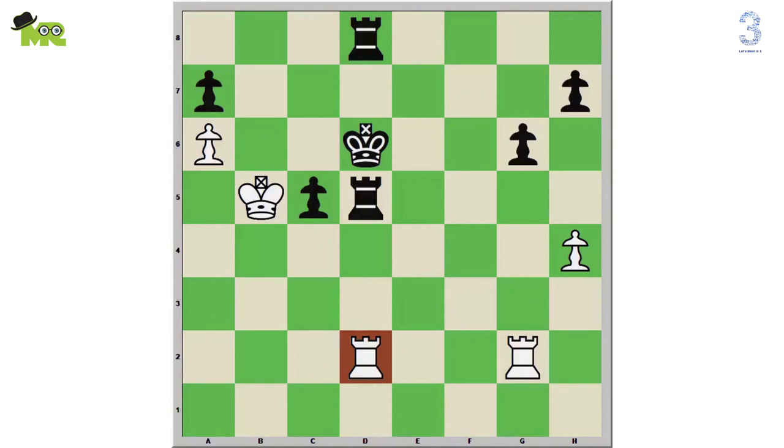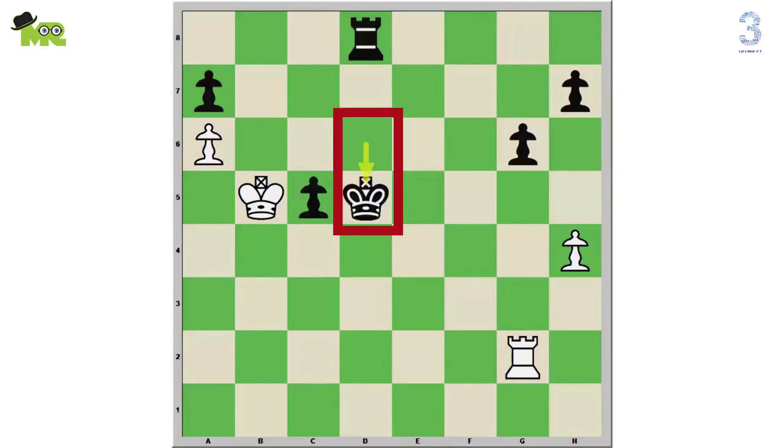From this position, the d2 white rook will capture the d5 black rook. Now the d6 black king will capture the d5 white rook. Now the d1 white rook will move to d2. This is check to the d5 black king by the d2 white rook.